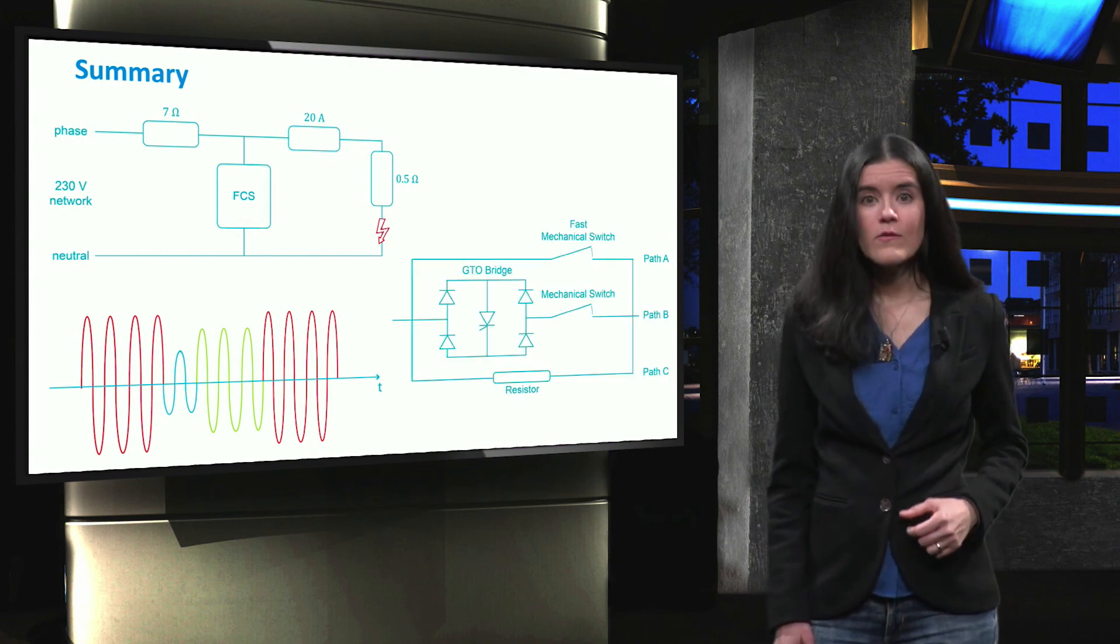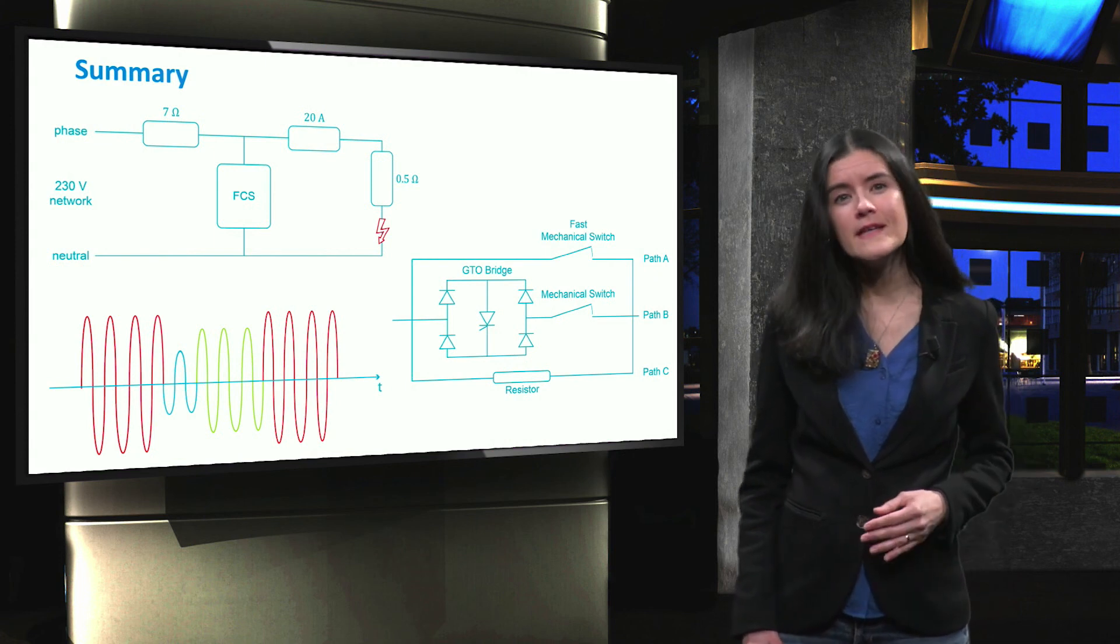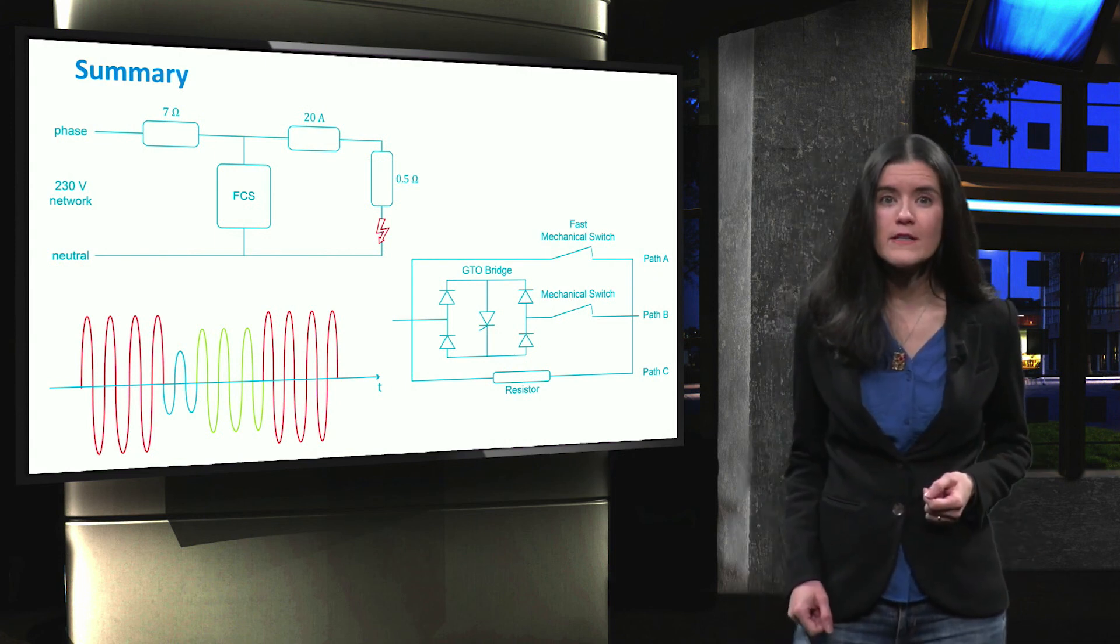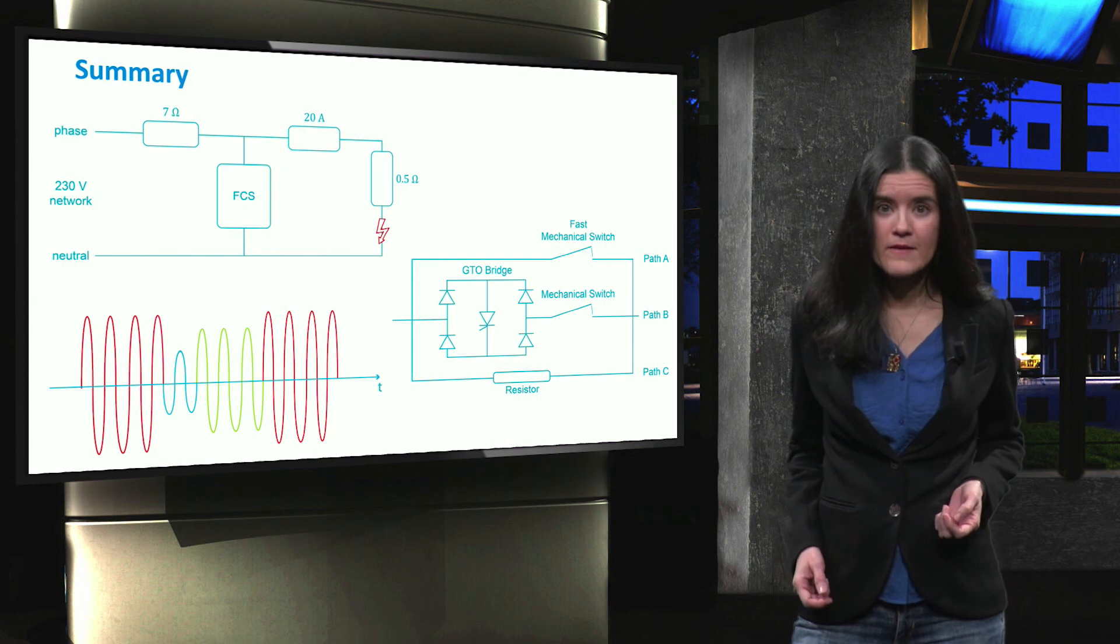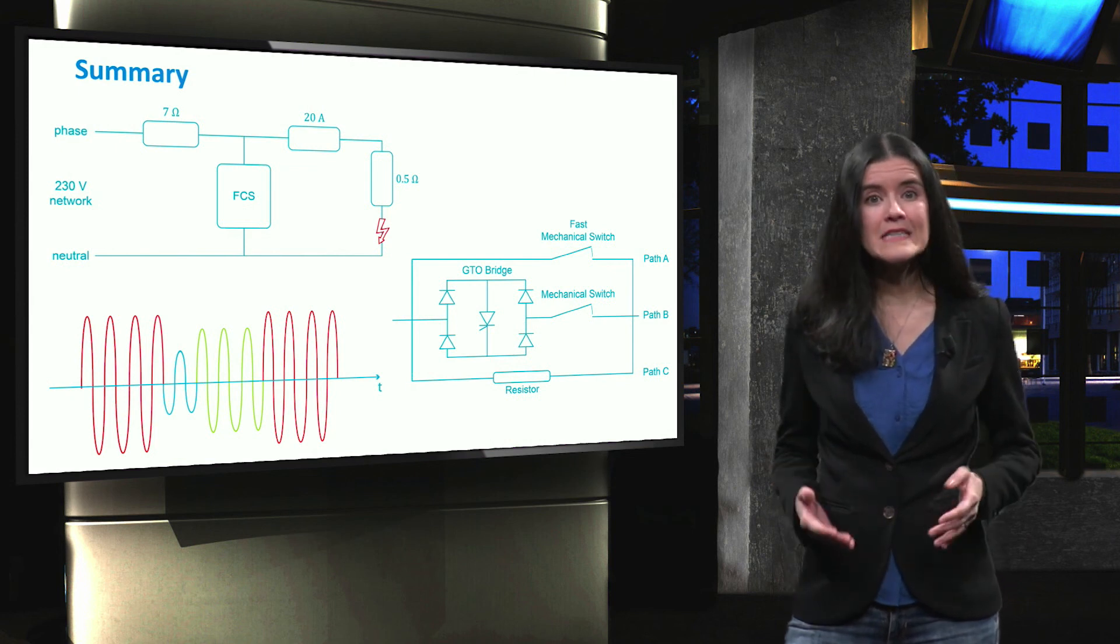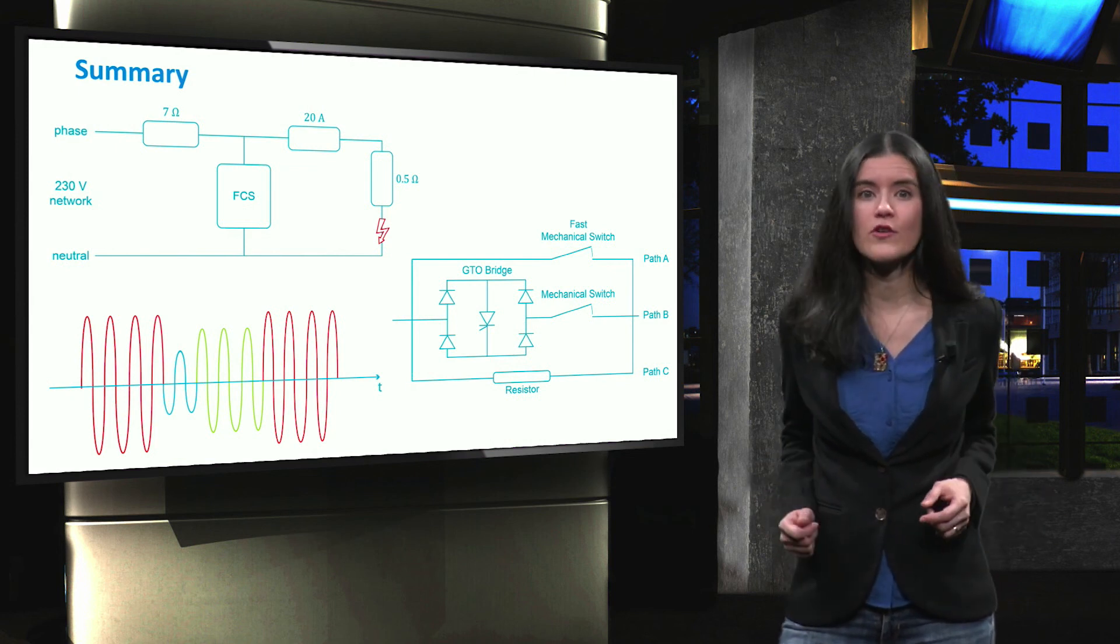Finally, we learned that in some cases a fault current limiter is needed to suppress a large fault current and prevent damages from happening. Fault current limiters are classified as either passive or active solutions.